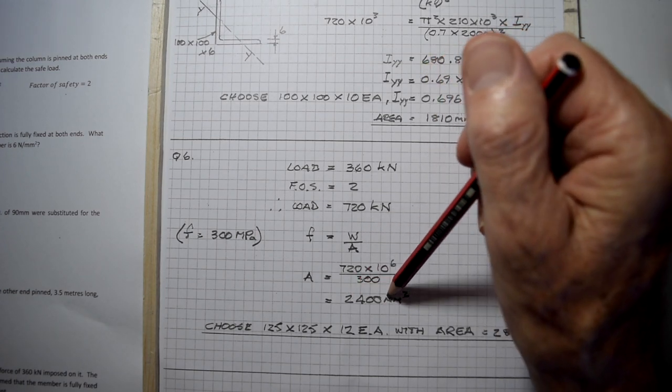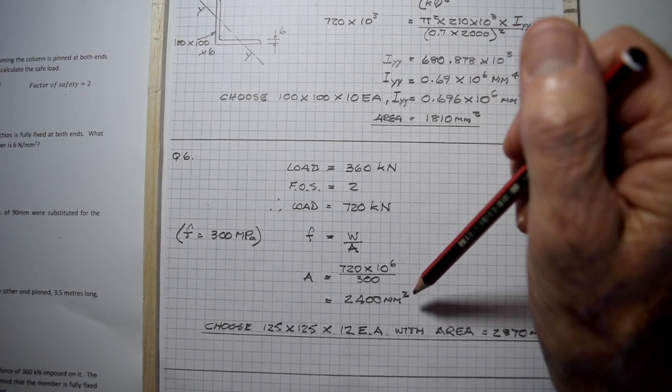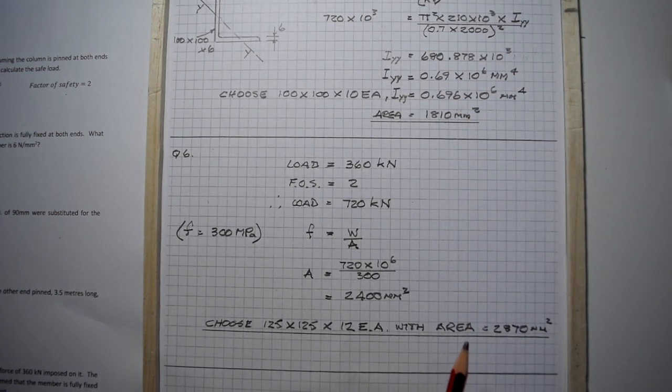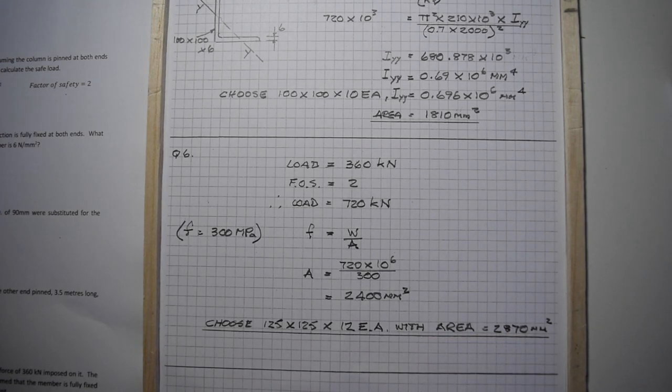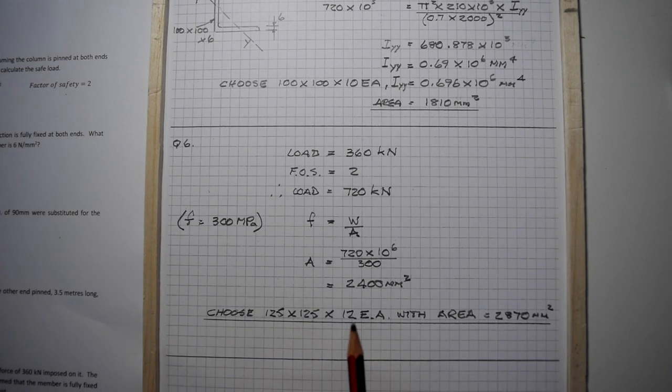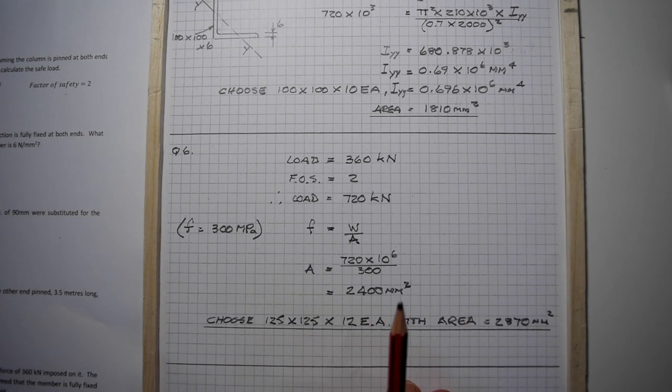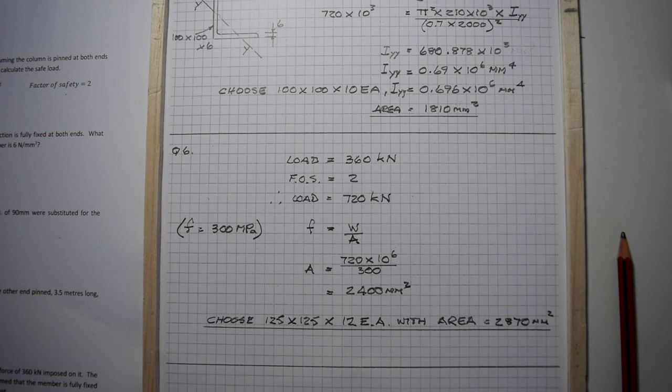Looking through your tables, a 125 by 125 by 12 equal angle with an area of 2870 square millimeters satisfies the equation. That's tutorial number nine for struts and columns, thank you.